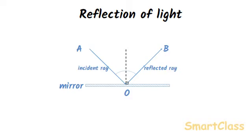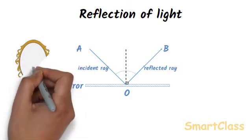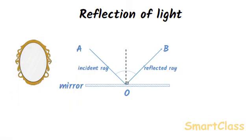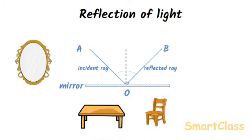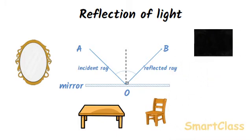Objects having polished, shining surfaces reflect more light than objects having unpolished, dull surfaces. For example, a mirror reflects almost all the light which falls on it. On the other hand, a table or chair having dull surfaces reflects only a small amount of light. And a black surface reflects almost no light.